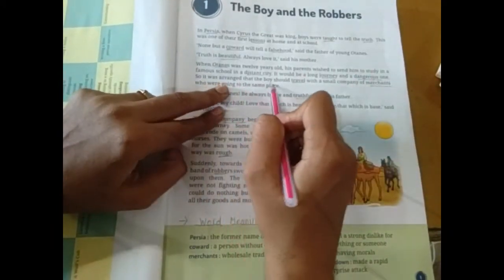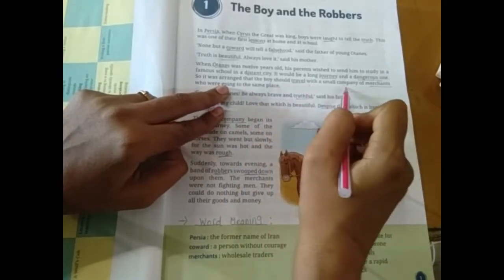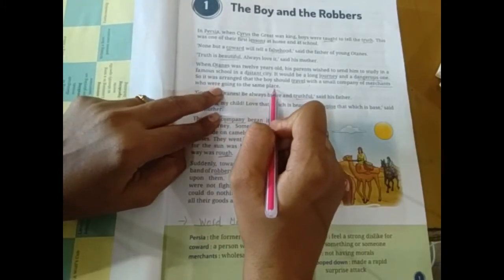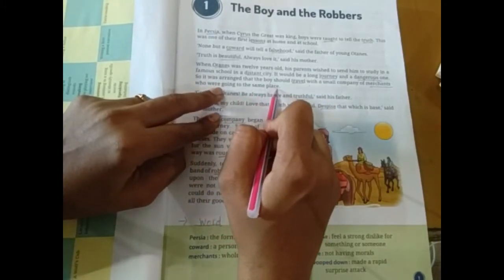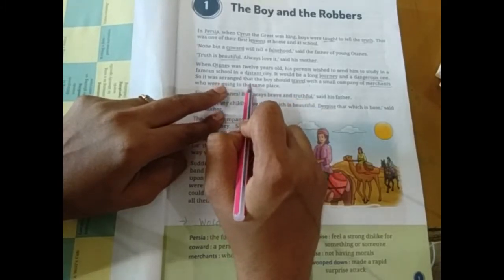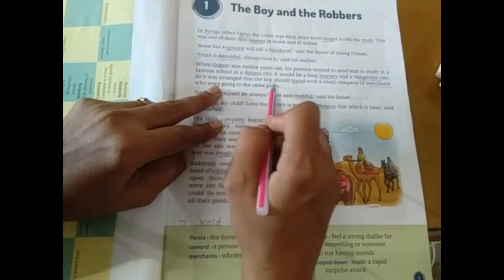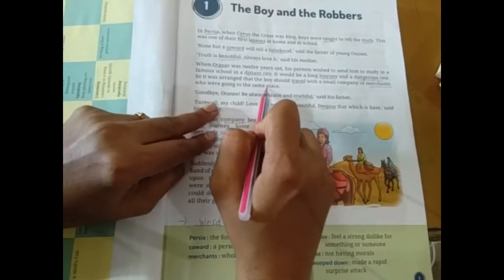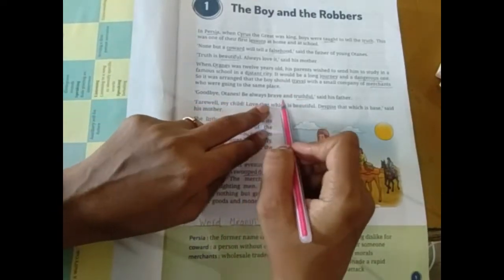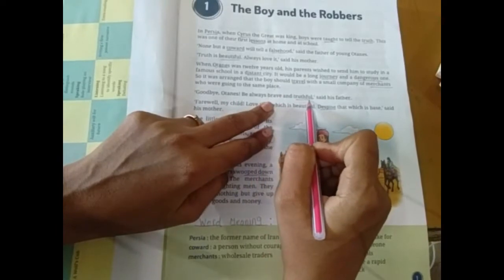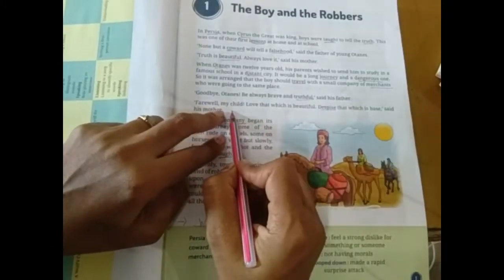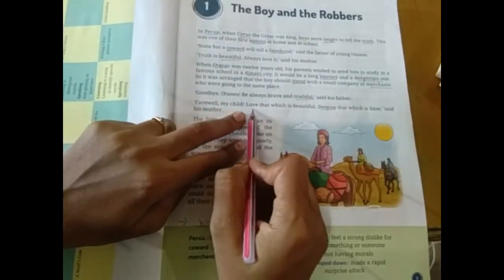So it was arranged that the boy should travel with a small company of merchants who were going to the same place. Chhote chhote jo veparij hai the, wo log wahi par ja rahe the, ka jahan Hortense ko jana tha. Unke parents ki chathi, wo bhi mera bachha bhi unke saath hi chala jaye. Goodbye, Hortense. Be always brave and truthful.